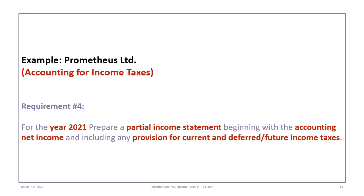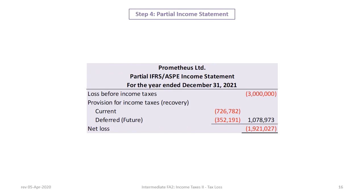Our fourth requirement is to prepare a partial income statement. Starting with the accounting loss before income taxes of three million dollars, we show a provision for income taxes section: current income tax recovery of seven hundred twenty-six thousand seven hundred and eighty-two in brackets, and deferred tax benefit — or future tax benefit under ASPE — of three hundred fifty-two thousand one hundred and ninety-one. The net loss recorded on the income statement is one million nine hundred twenty-one thousand and twenty-seven dollars.